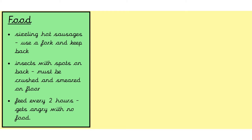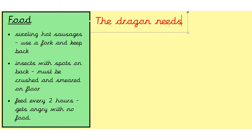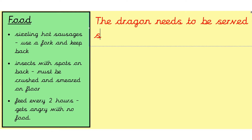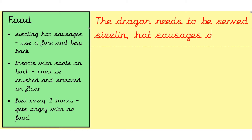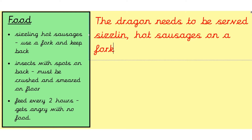Now I'm going to turn this into a paragraph about the food the dragon eats. I'm going to take the first note, sizzling hot sausages. I'm going to start: the dragon needs to be served sizzling — remember, comma when you split your adjectives — hot sausages, and my prepositional phrase: on a fork.